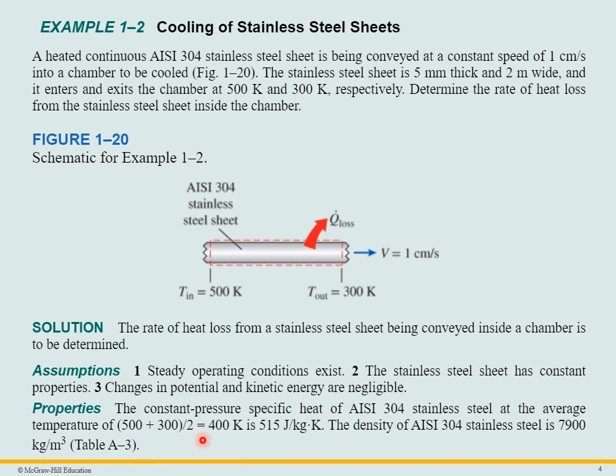We find that it's 515 joule per kilogram Kelvin. And we can also look up the density, which is 7,900 kilogram per cubic meter. So one note here is that you're really going to have to have these tables to be able to work some of these problems because a lot of the properties are found in the tables.